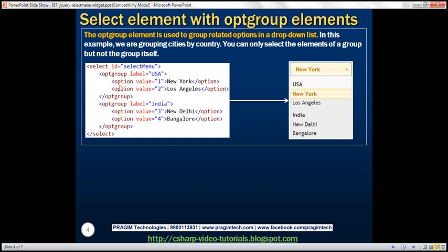With this HTML, this is how the drop-down list will be rendered. We have a group USA with two cities underneath, and another group India with two cities. From these options you can only select the members of a group, not the group itself.